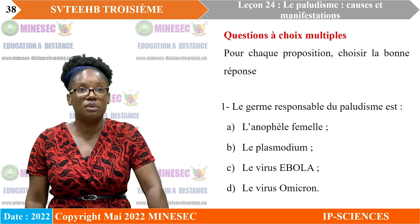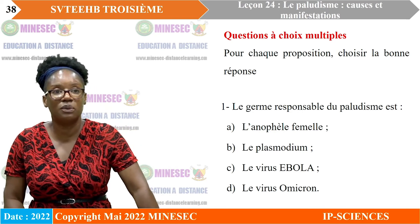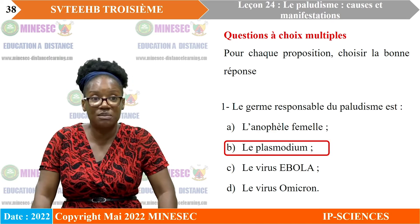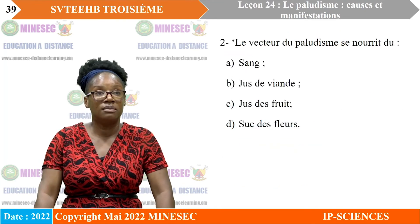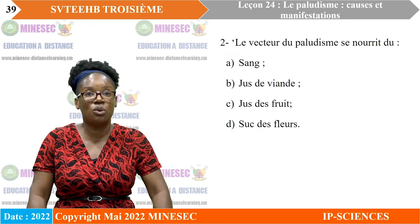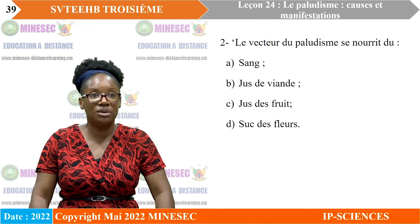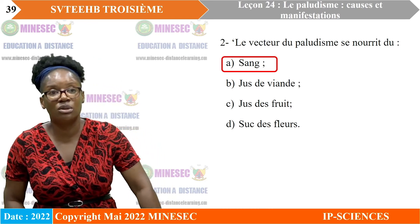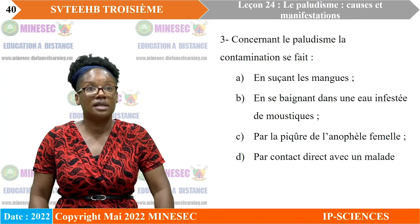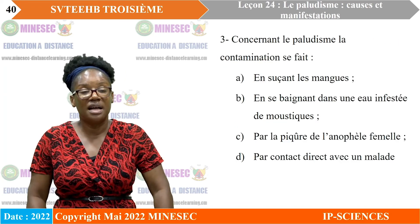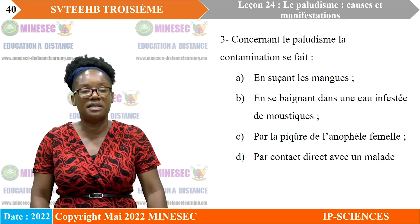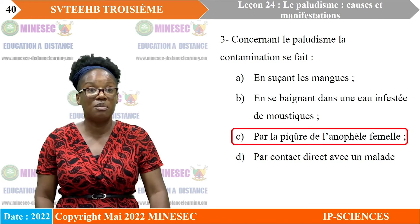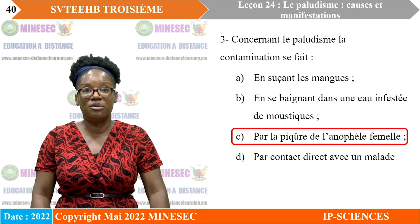Questions à choix multiple. Le germe responsable du paludisme est le plasmodium. Le vecteur du paludisme se nourrit de sang : l'anophèle femelle se nourrit uniquement du sang. Concernant le paludisme, la contamination se fait par la piqûre de l'anophèle femelle.